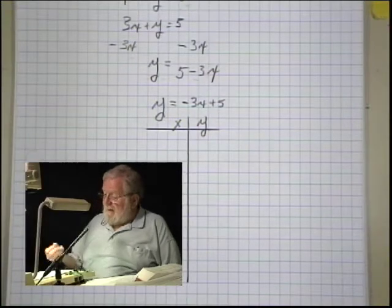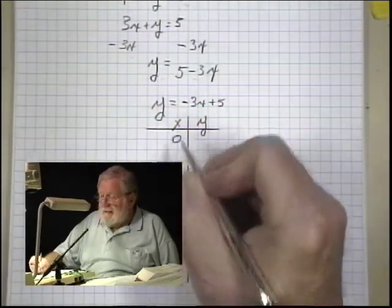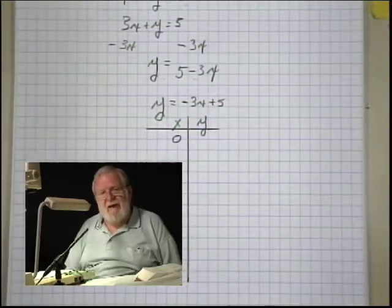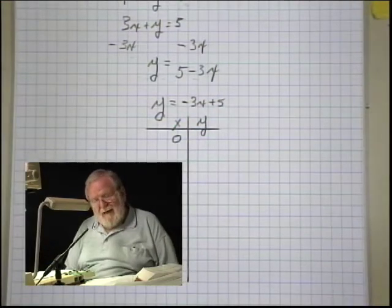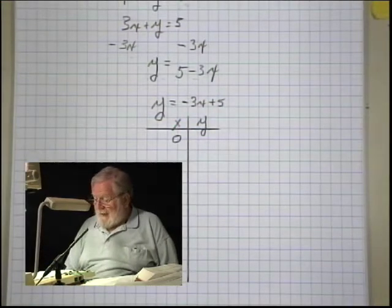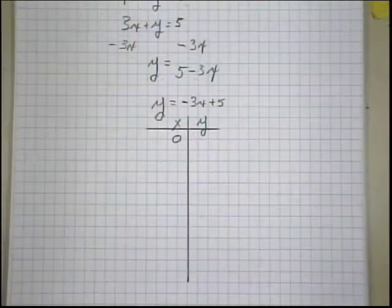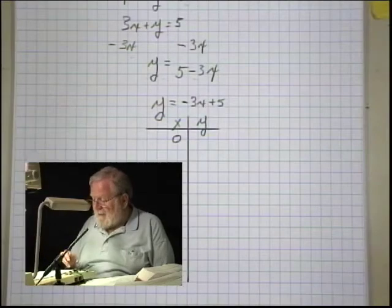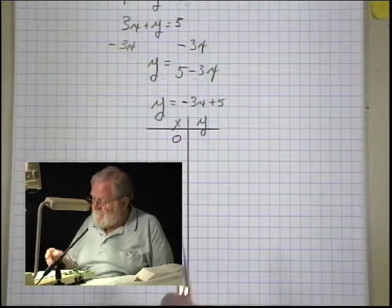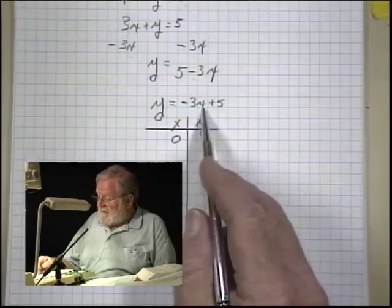We do that by building a table, and we're going to assume values for x and generate values for y. We'll start always with zero. There's no rule that says you have to start with zero, but I always do. I always do a couple of positive numbers when I generate ordered pairs, and then a couple of negative numbers. We'll show you why it's important to do both in a little bit, in another lesson.